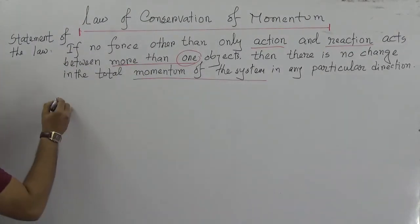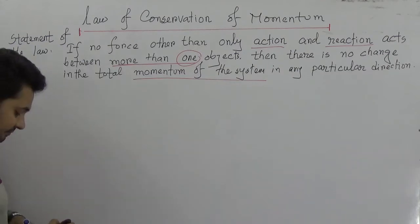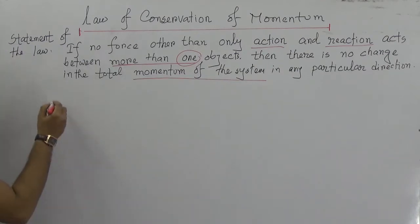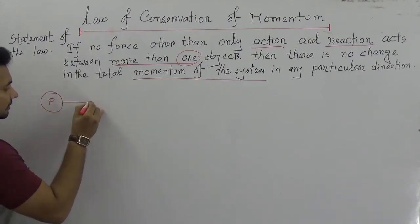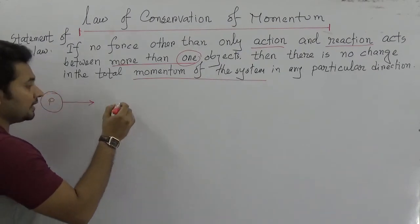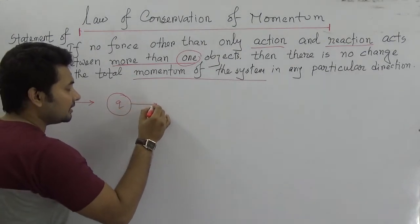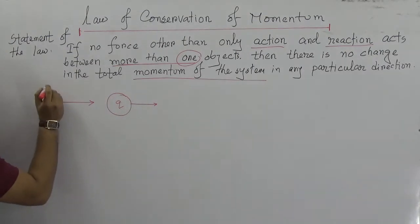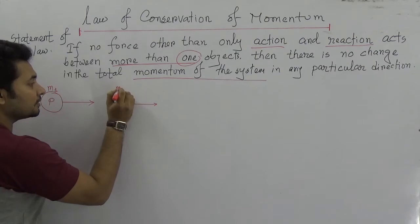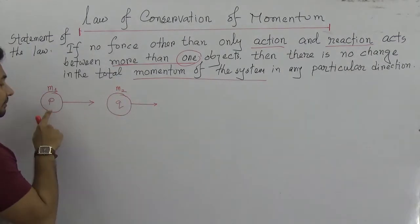Let two bodies - if you say that this is a body P moving in this direction and there is another body Q moving in the same direction. So the mass of P is M1 and mass of Q is M2.